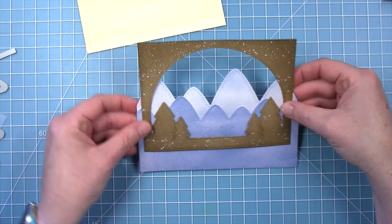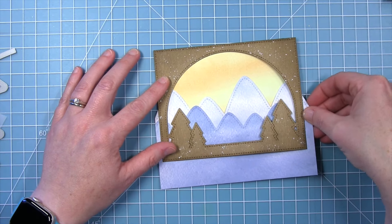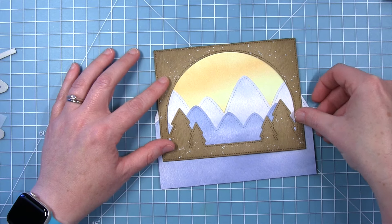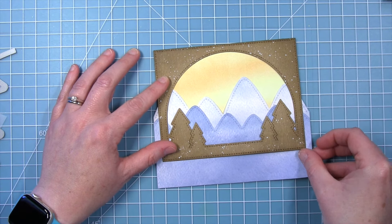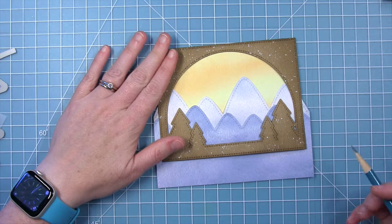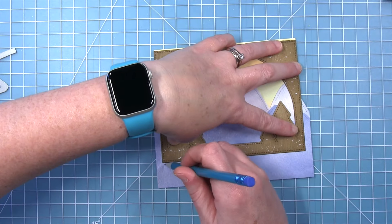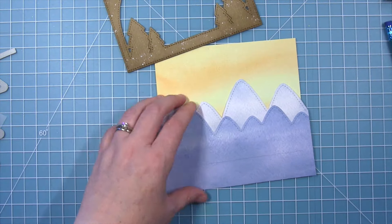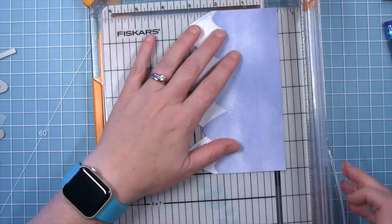So I'm going to put them in my frame, decide how far up I want them to go, and then I'm just going to make a little pencil line about where I need to trim it off at the bottom. So I can trace right along the bottom of that frame and trim the bottom of these mountains off.